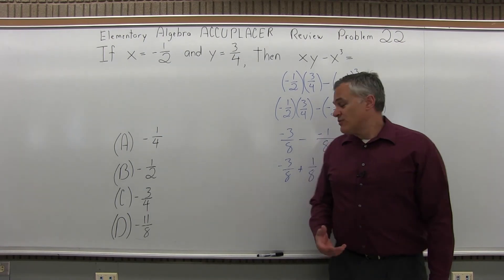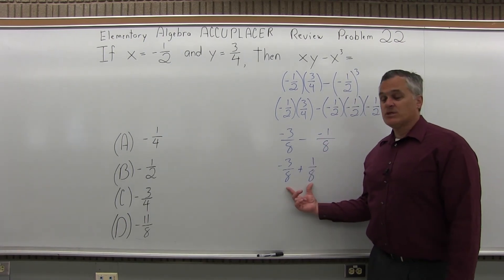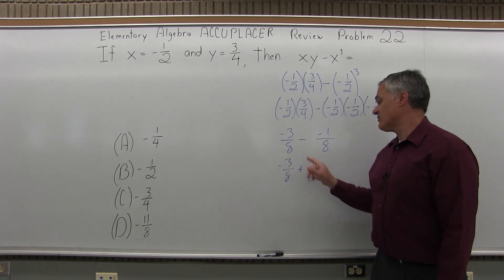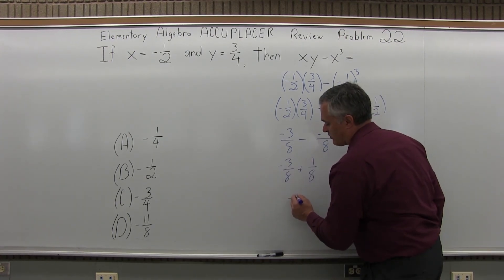Now to add my fractions, fortunately I already have a common denominator, which is eight. That's great. So I can just combine the numerators, negative three and positive one. So negative three and positive one is negative two over my common denominator of eight.